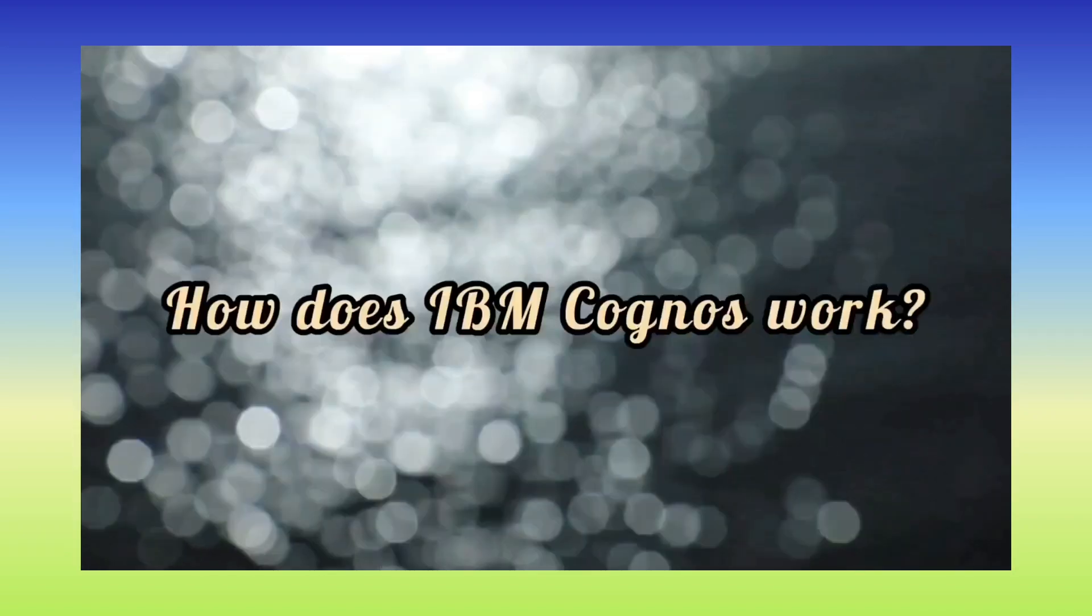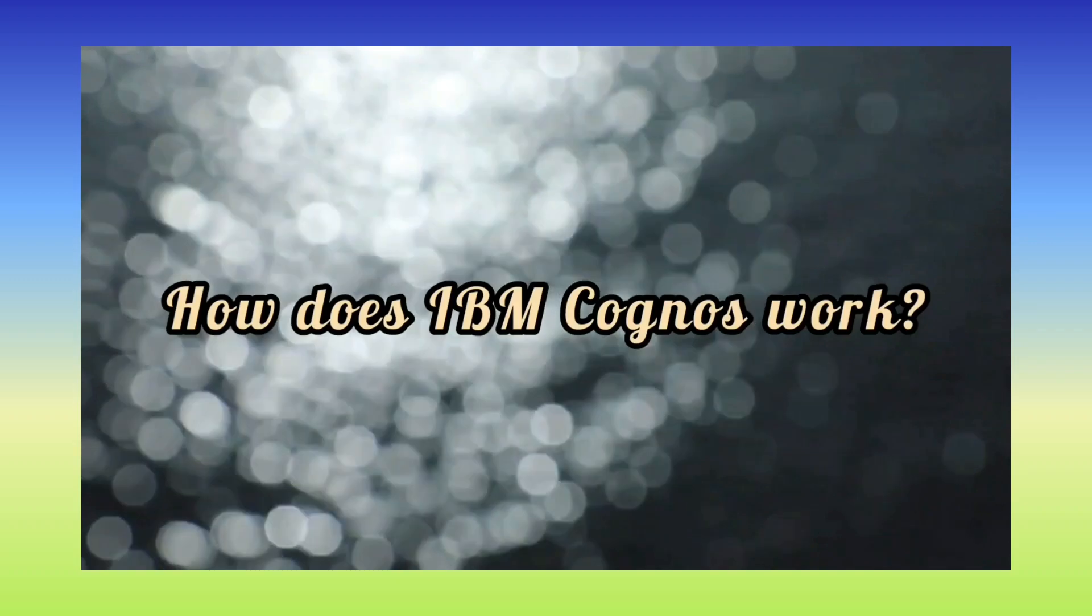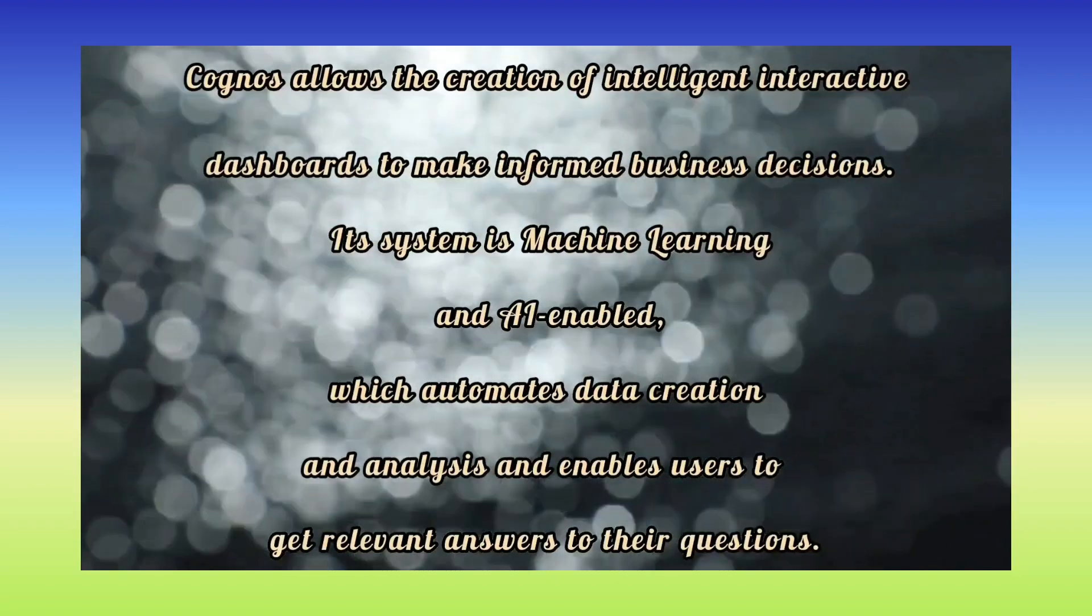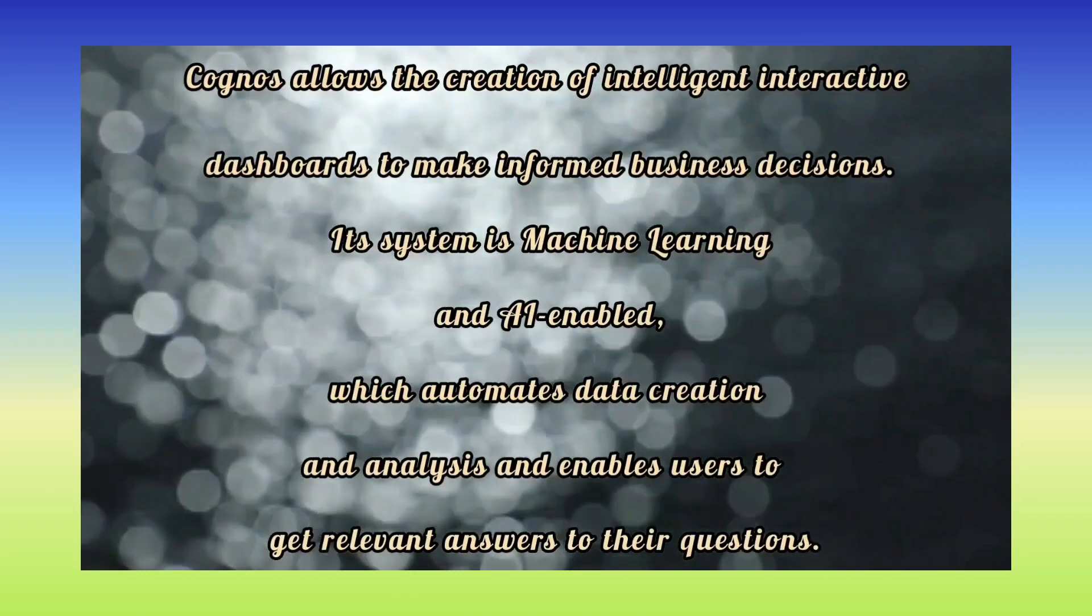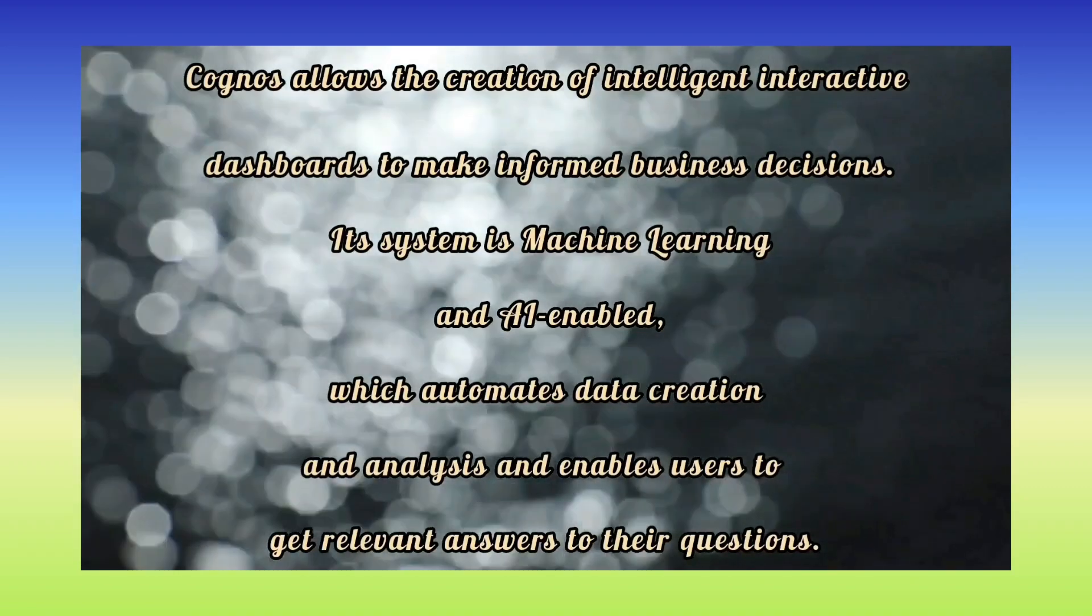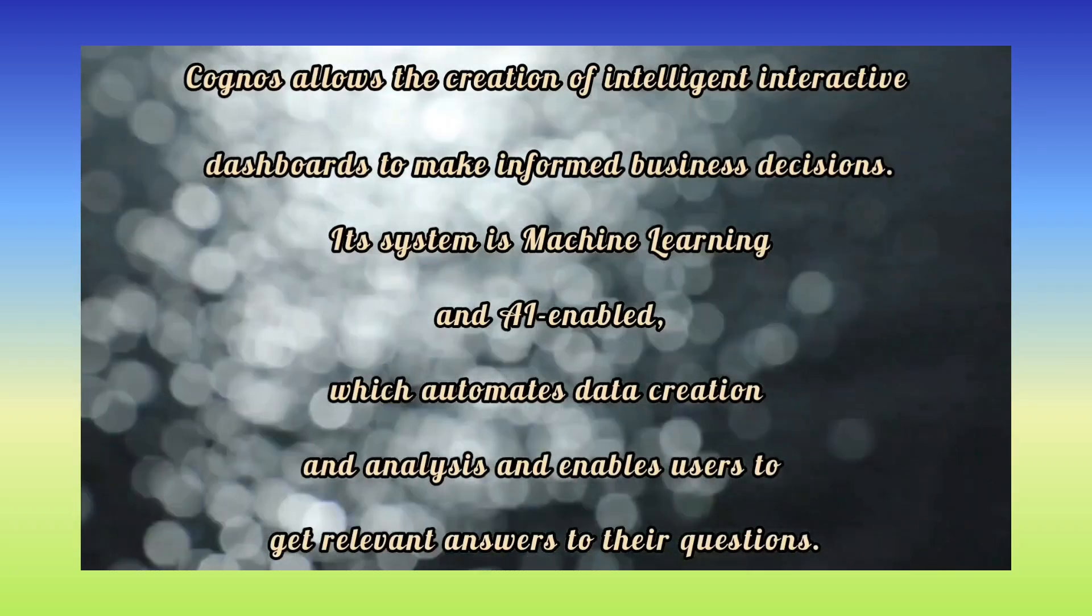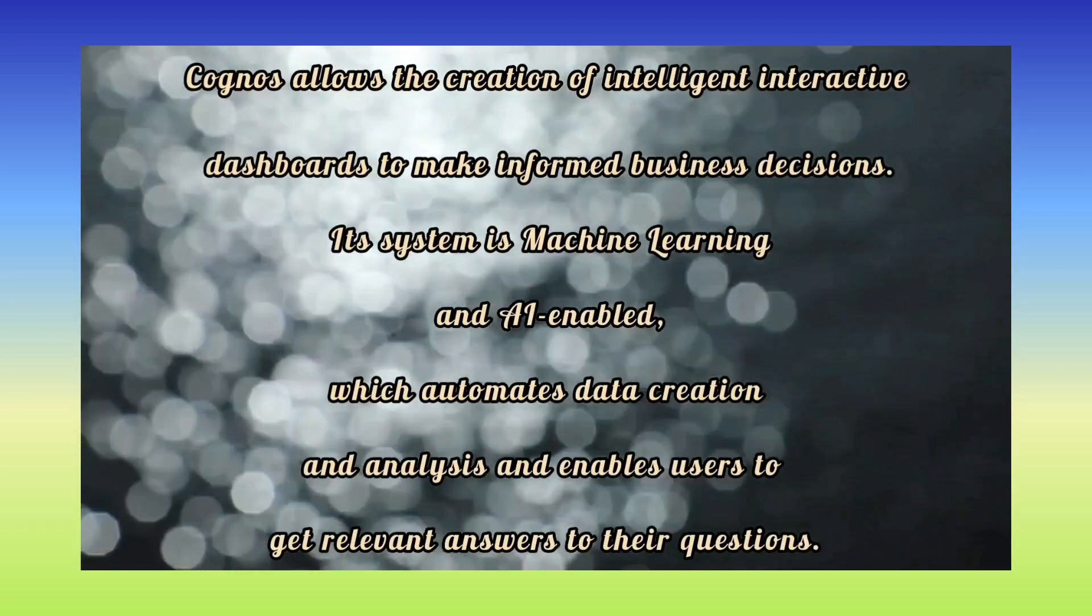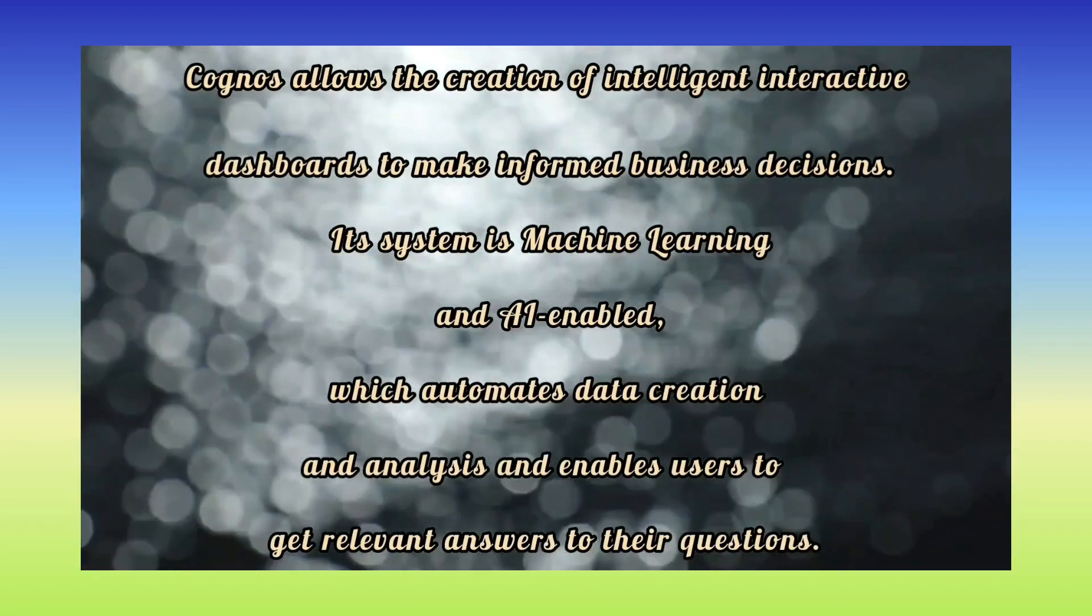How does IBM Cognos work? Cognos allows the creation of intelligent interactive dashboards to make informed business decisions. Its system is machine learning and AI enabled, which automates data creation and analysis and enables users to get relevant answers to their questions.